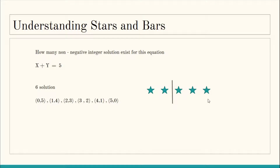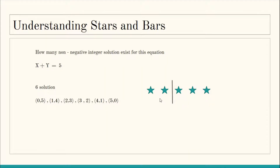Each solution can be represented using these stars and bars. The solution (0,5) is when the bar is all the way to the left — nothing on the left, five stars on the right, so X gets 0 and Y gets 5. Similarly for (1,4), move the bar one position over: left side has one star, right side has four. There are six different configurations, ranging from placing the bar at the leftmost to the rightmost position, and these six configurations represent the six different solutions.